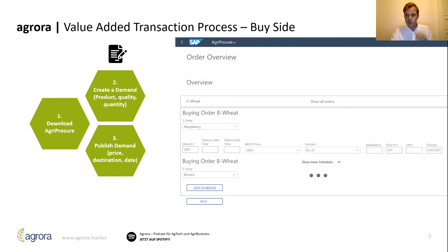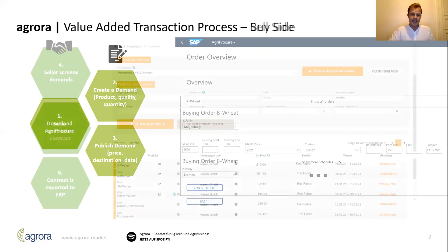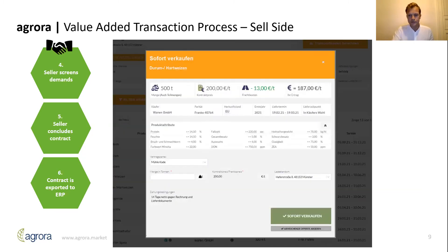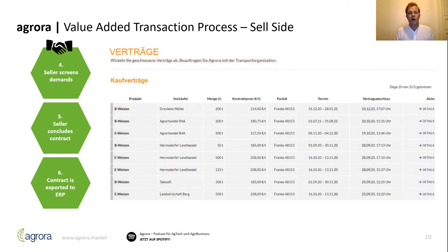Now let's switch the perspective and switch to the seller side. This is an example of a web interface where sellers can screen demands, compare them with one another, and conclude contracts with only one click. After the contract conclusion, the seller receives an overview of all the contracts concluded and can act accordingly.